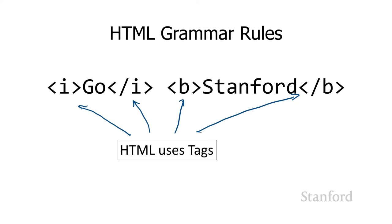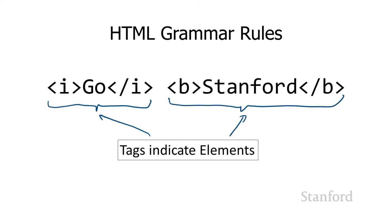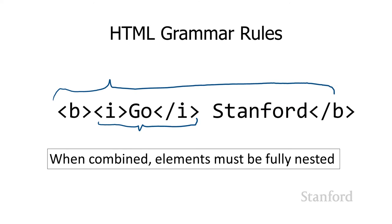We've learned some grammar rules — or syntax rules — for HTML. For example, HTML uses tags; tags come in start tags and end tags; tags indicate elements, where an element is the start tag, end tag, and contents. We also learned rules for combining tags, and that tags must be fully nested — the italic tag must be completely contained in the bold tag, or vice versa. We can't mix the two.